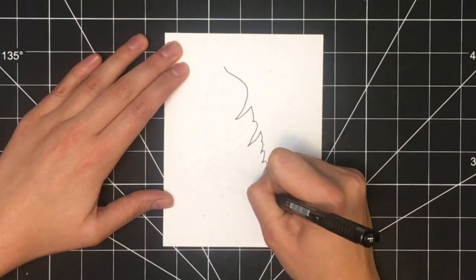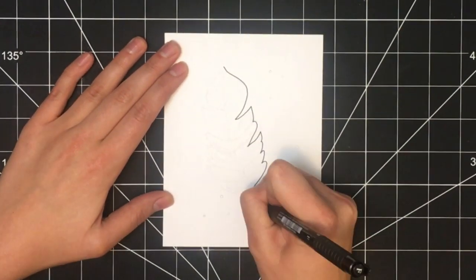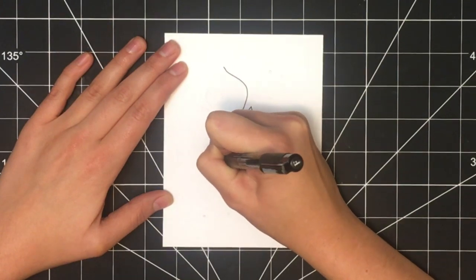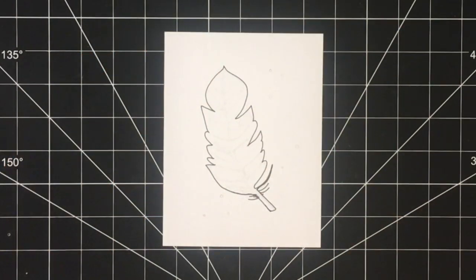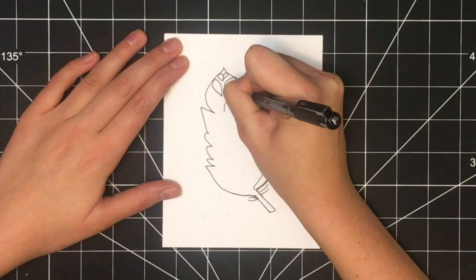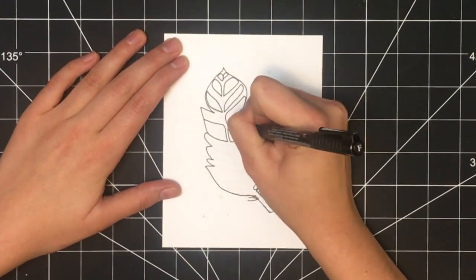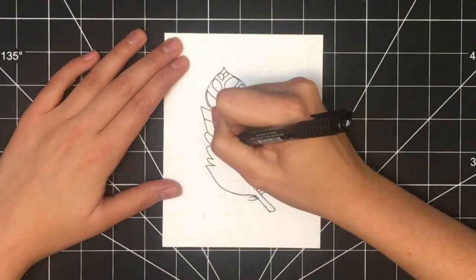Next, take your thin black pen. Here I'm using a Faber-Castell pen in size F to outline the feather. Then continue outlining pieces of the feather by going in and outlining each section.